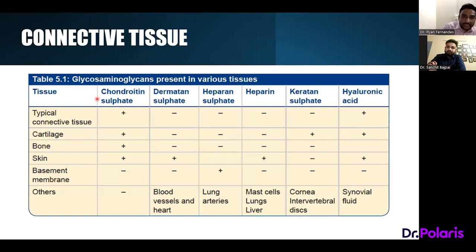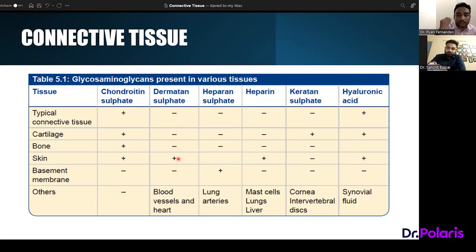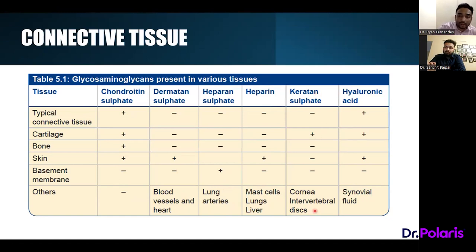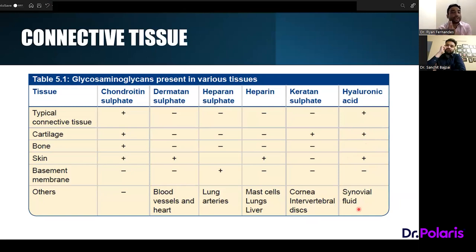Each GAG is found in specific tissues. Chondroitin sulfate is present in typical connective tissues, cartilage, bones, and skin, but not in basement membranes. Dermatan sulfate is present mainly in skin, blood vessels, and heart. Heparan sulfate is found in basement membranes, lungs, and lung arteries. Heparin is found in skin and muscles. Keratan sulfate is found in cartilage, cornea, and intervertebral discs. Hyaluronic acid is found in typical connective tissue, cartilage, skin, and synovial fluid.